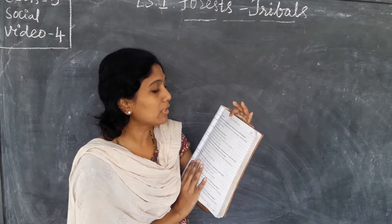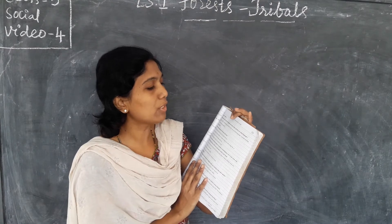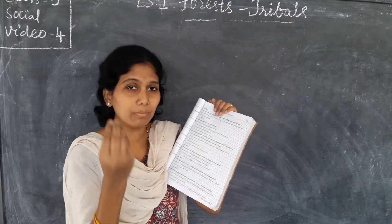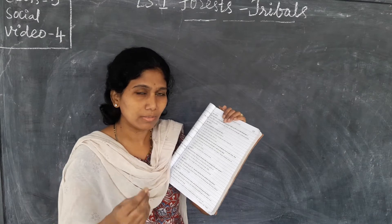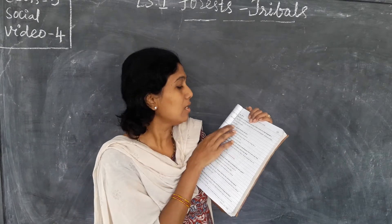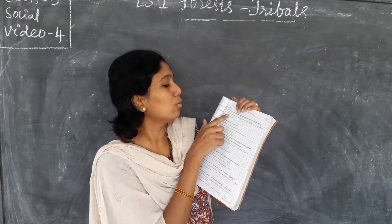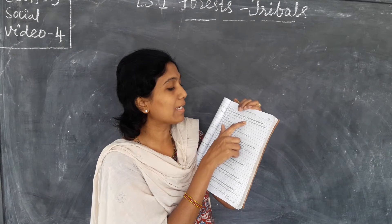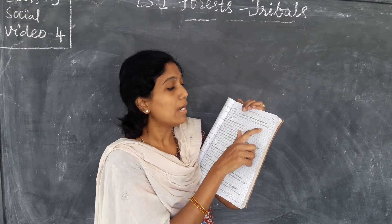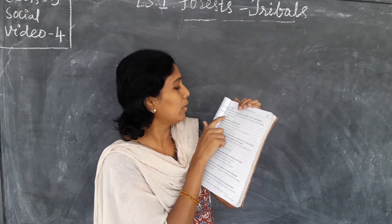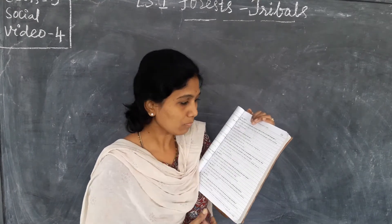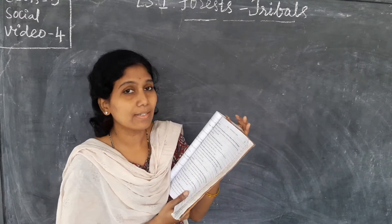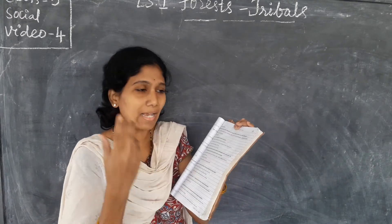Mention some of the languages. Which of them are tribal languages? I explained some tribal languages. Telugu, Urdu, Lambadi, Koya, Kannada, Tamil, etc. are some languages. Lambadi and Koya are the tribal languages. Even Chenchus and Gonds have their own languages.